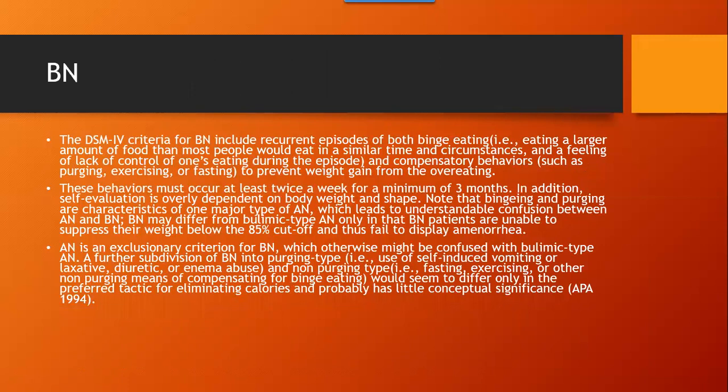The DSM criteria for bulimia include recurrent episodes of binge eating — eating a larger amount of food than most people would eat in a similar time and circumstance — along with a feeling of lack of control over one's eating during the episode. Also included are compensatory behaviors such as purging, exercising, or fasting to prevent weight gain from the overeating, essentially equalizing it out.